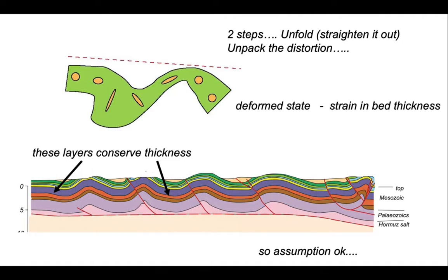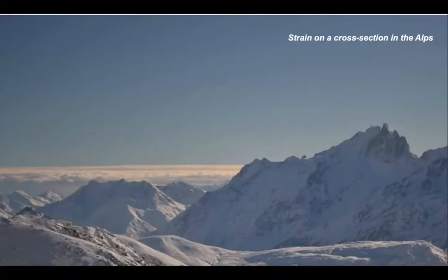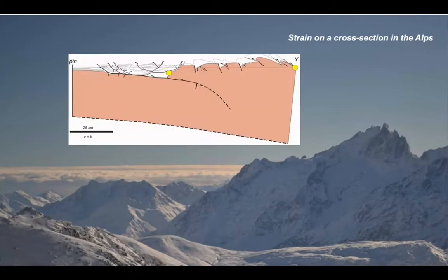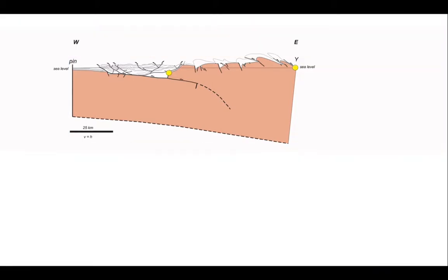Let's move away from the Zagros and consider the strain on a cross-section in the Alps. Here's the cross-section. It's crustal scale, so all that pink material on the section is crystalline basement down to the Moho. Notice the scale. It's 25 kilometres and vertical and horizontal scales are equal.